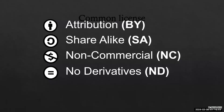You will always be attributed as the core author, and if you're using OER downstream you always want to include that attribution — you never want to remove the attribution from OER that you're using. The next icon is this circular arrow: Share Alike, or SA. What that means is that if you're using content that has that Share Alike icon, you need to use the same license that is on that content. If it has an SA, no matter what the license is, you have to share that content using the same license.